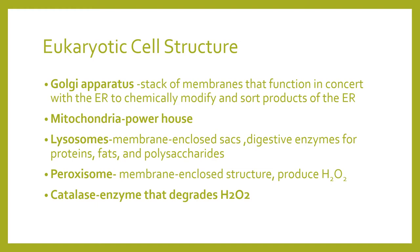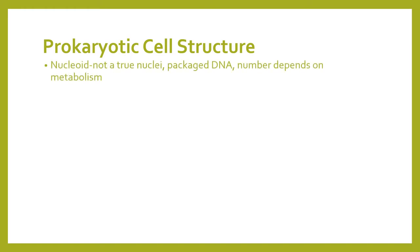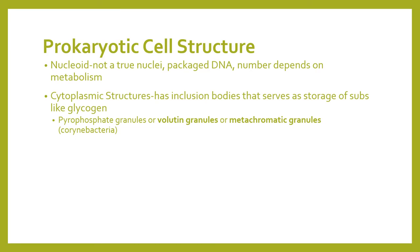Now we proceed to prokaryotic cells. Prokaryotic cells contain a nucleoid, which is not a true nucleus — it is just packaged DNA whose quantity depends on the activity or metabolism of the cell. The cytoplasmic structures include inclusion bodies that serve as storage of substances like glycogen, pyrophosphate granules, or volutin granules — also called metachromatic granules — which are cytoplasmic structures found in Corynebacterium.